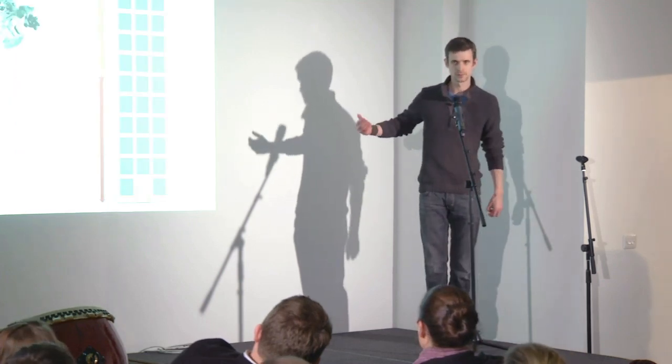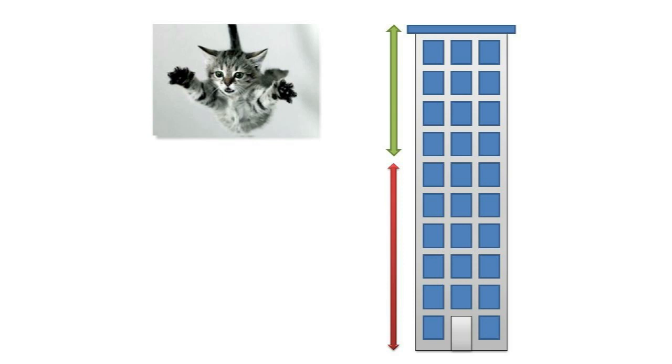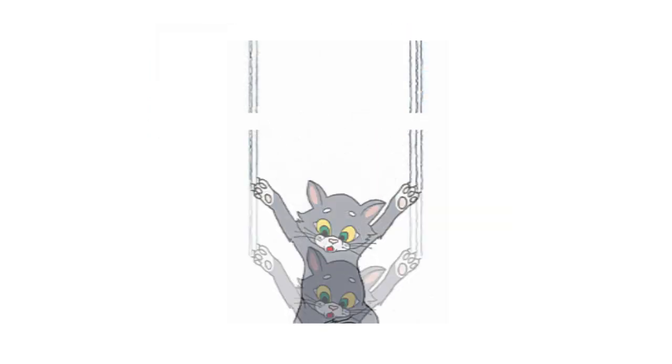And when they looked at the results, they found some strange things. So for the first few floors, it was normal. It was worse to fall off the second floor than the first floor, the third floor than the second floor, all the way up to the sixth floor. The sixth floor was the worst floor to fall off. After the sixth floor, it got better. So it was better to fall off the seventh floor or the eighth floor or the 34th floor than it was to fall off the sixth floor.